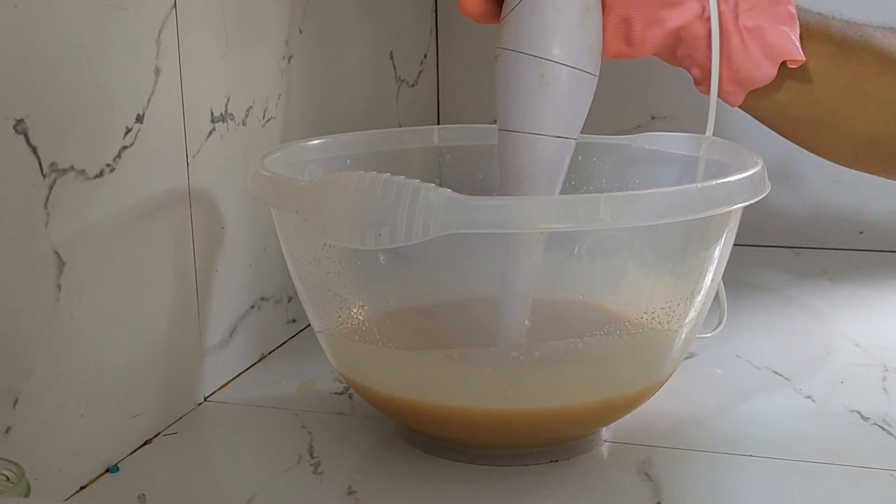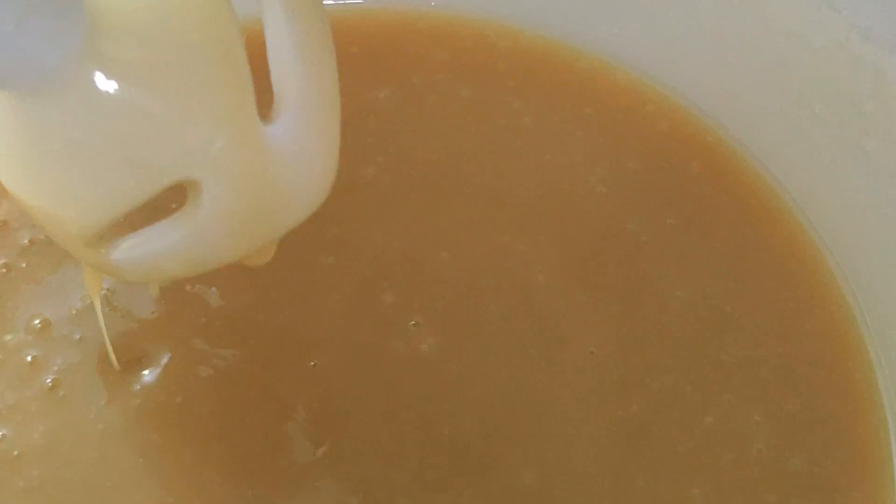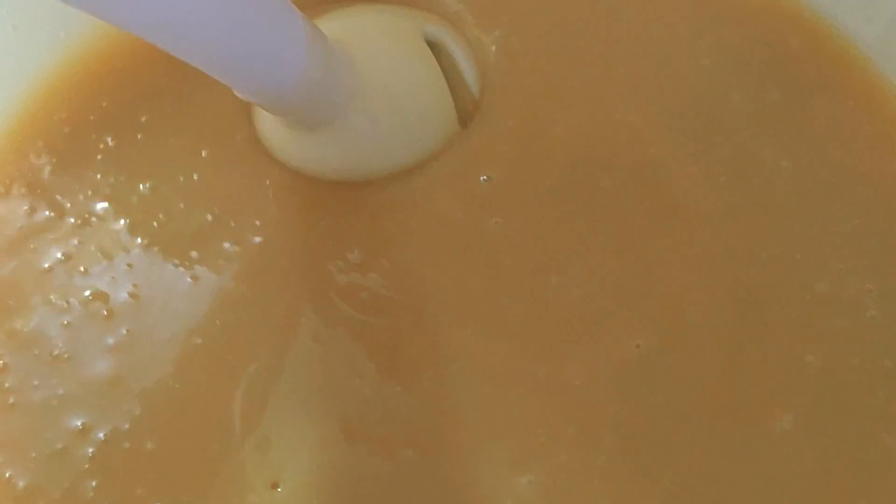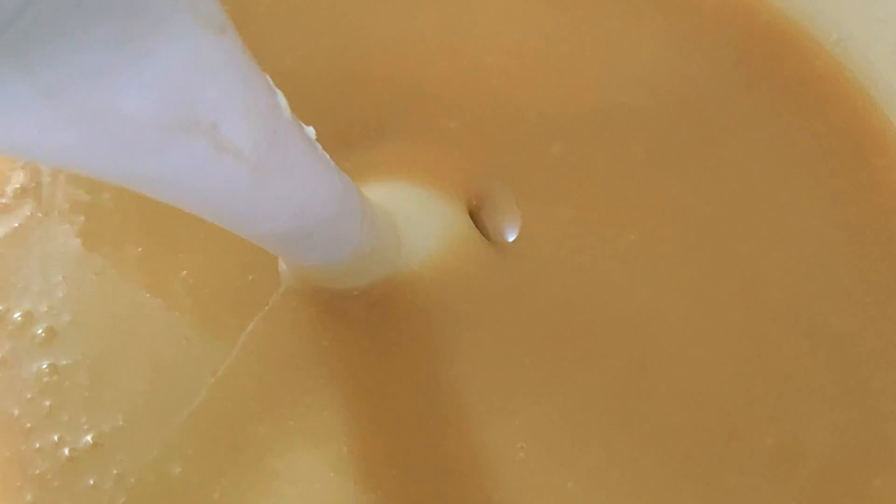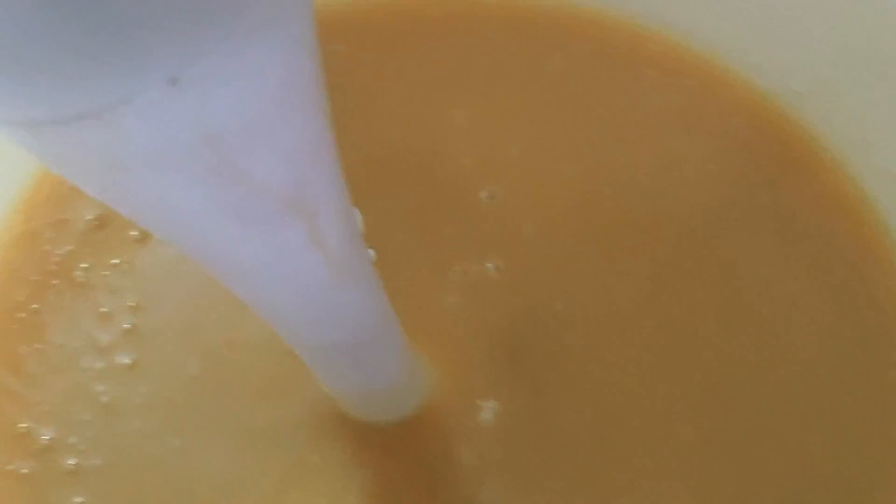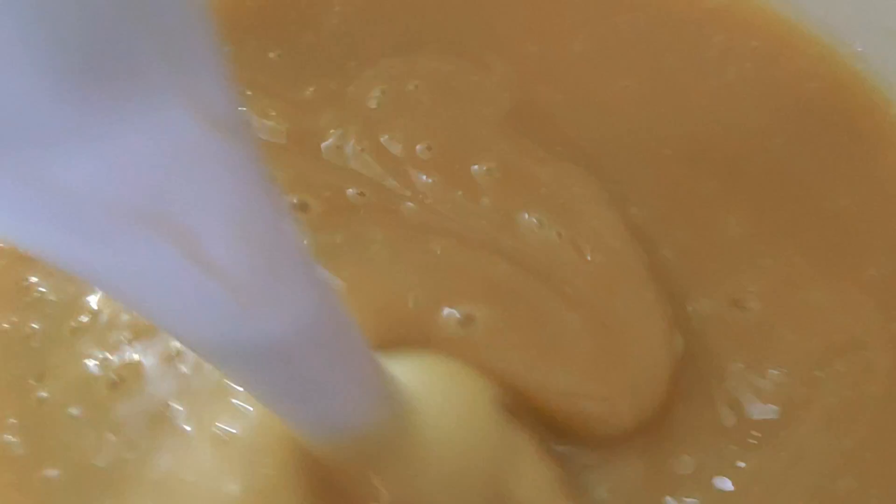At this point I'm mixing the soap with the stick blender, giving short bursts of the stick blender and sometimes just mixing with my hand because if you go too quickly you might get the soap really thick really quickly. Now trace is when the soap gets quite thick and is ready to be poured into the mold. Usually when you lift your stick blender you'll notice patterns being formed on top of the soap.